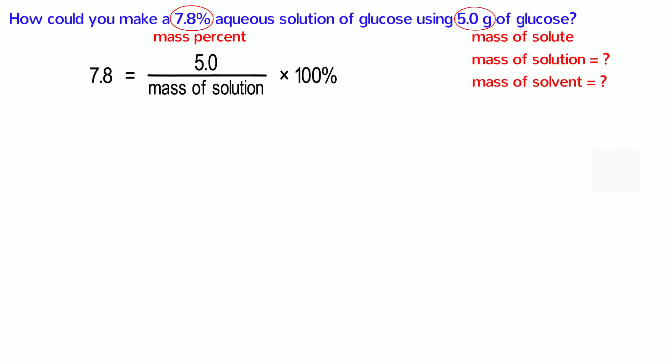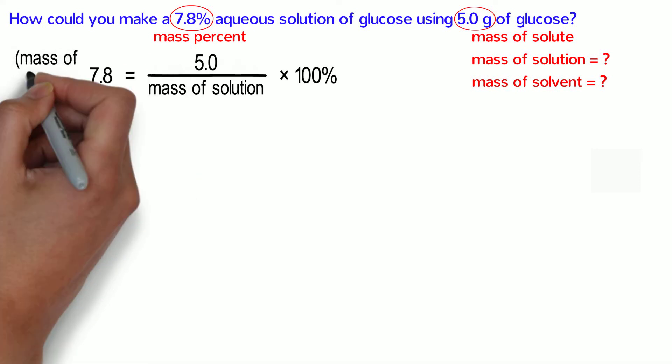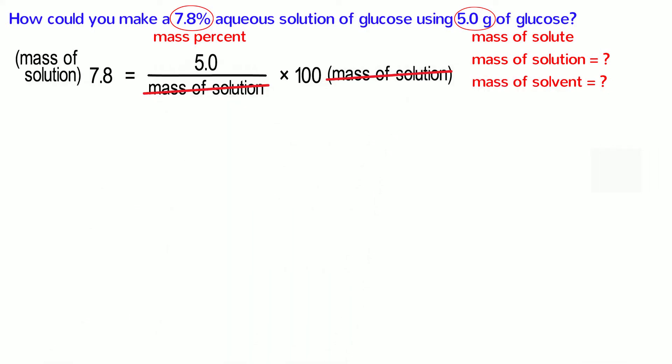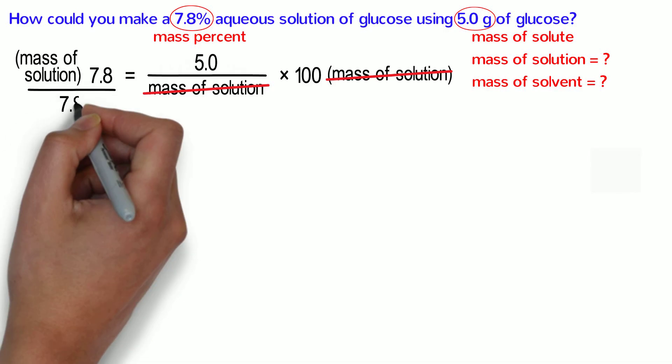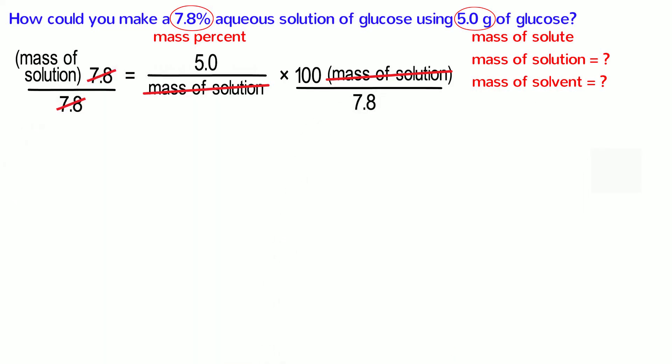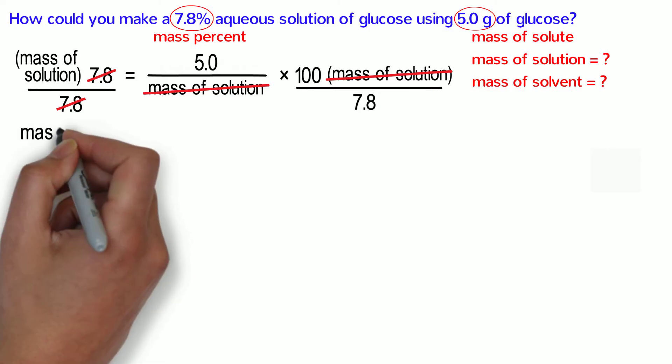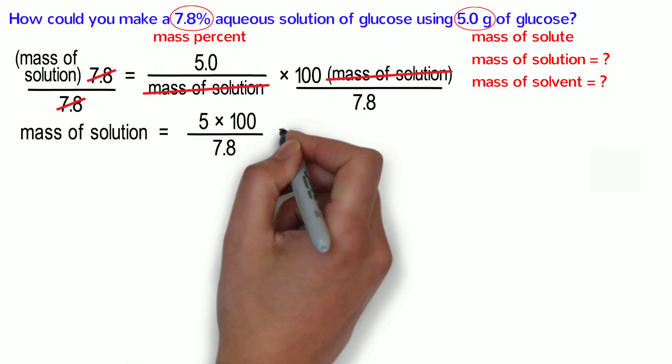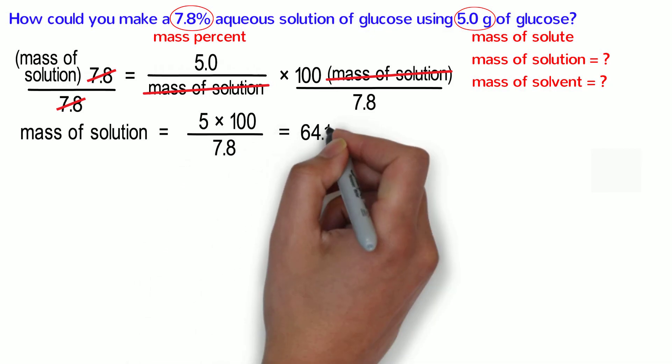In order to solve this problem, we need to do a little bit of rearranging. The variable we are solving for cannot be in the denominator, so the first thing we need to do is multiply both sides of the equation by the mass of the solution. Mass of the solution then cancels out on the right side of the equation. Next, we need to get the mass of the solution all by itself, so we divide both sides by 7.8. The 7.8 on the top and bottom of the fraction cancel each other out. This leaves us with the mass of the solution equals 5 times 100 divided by 7.8, which calculates to be 64.1.